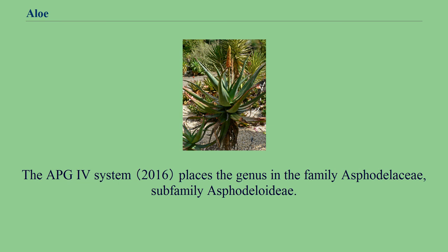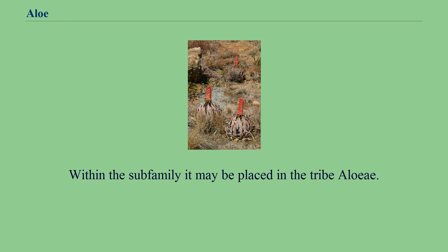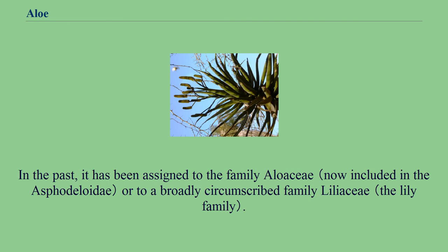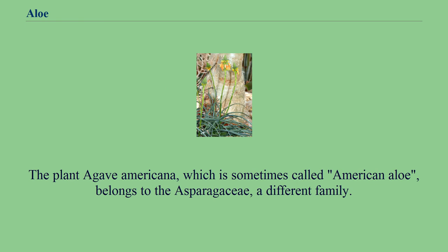The APG4 system places the genus in the family Asphodelaceae, subfamily Asphodeloideae. Within the subfamily it may be placed in the tribal Aloeae. In the past, it has been assigned to the family Aloeaceae or to a broadly circumscribed family Liliaceae. The plant Agave americana, which is sometimes called American aloe, belongs to the Asparagaceae, a different family.